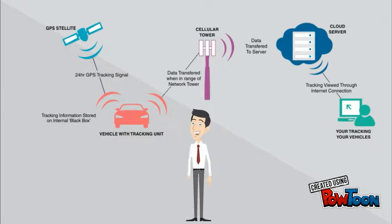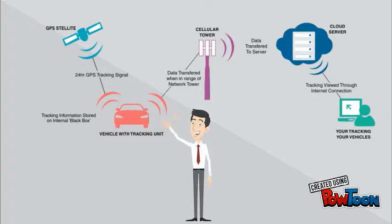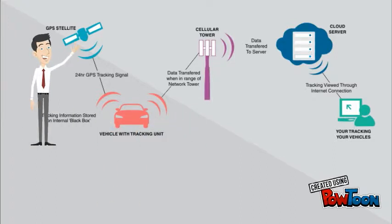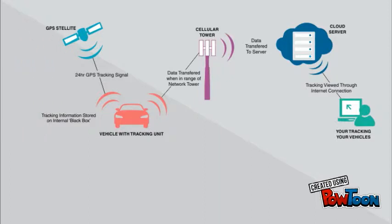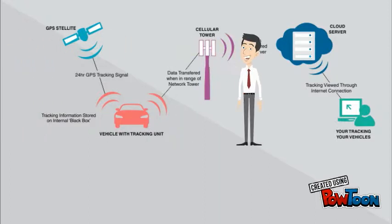Here comes the working of the proposed solution. This is the basic block diagram of the idea to be implemented. The device in the car gets GPS data in NMEA format from a GPS satellite, and after processing, this data is uploaded to the cloud server through the cellular network.